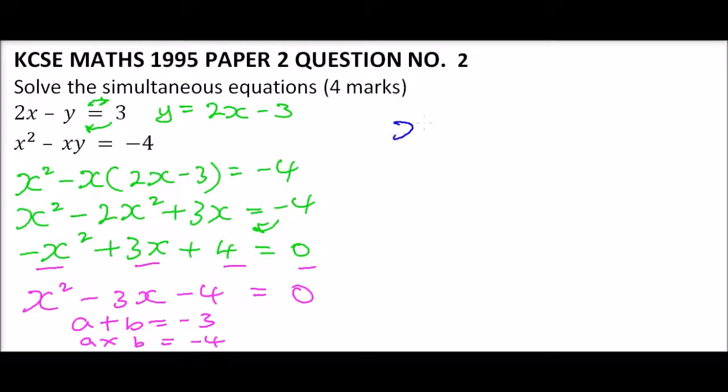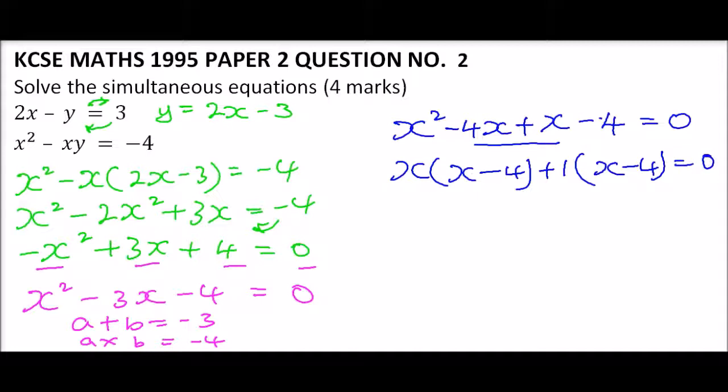We get two numbers such that when you add them you should get minus 3, and when you multiply them you should get minus 4. These two numbers are minus 4 and 1. We rewrite our equation as x squared minus 4x plus x minus 4 equals 0. We factor out: x times (x minus 4) plus 1 times (x minus 4) equals (x minus 4)(x plus 1) equals 0.